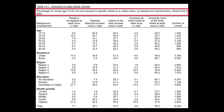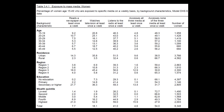The subtitle of the table is: Percentage of Women Age 15–49 Who are Exposed to Specific Media on a Weekly Basis According to Background Characteristics, Model DHS 620. As you may have noticed, the subtitle contains much more information than the title. The first thing the subtitle tells you is the denominator for the table — in this case, women age 15–49.